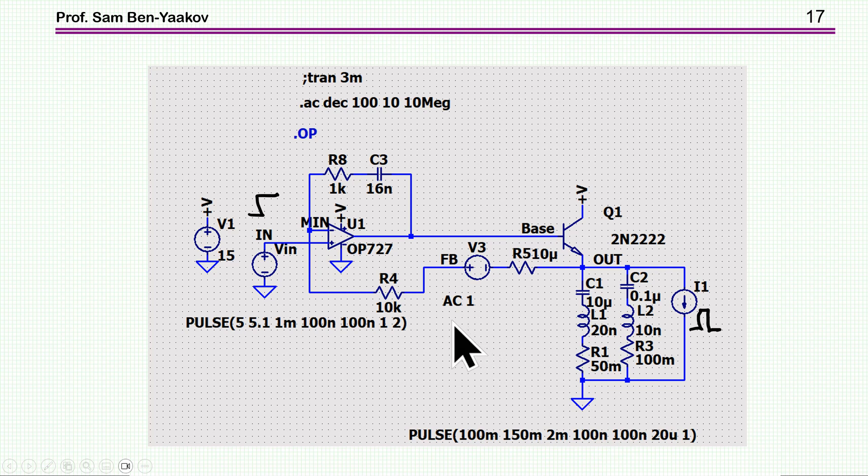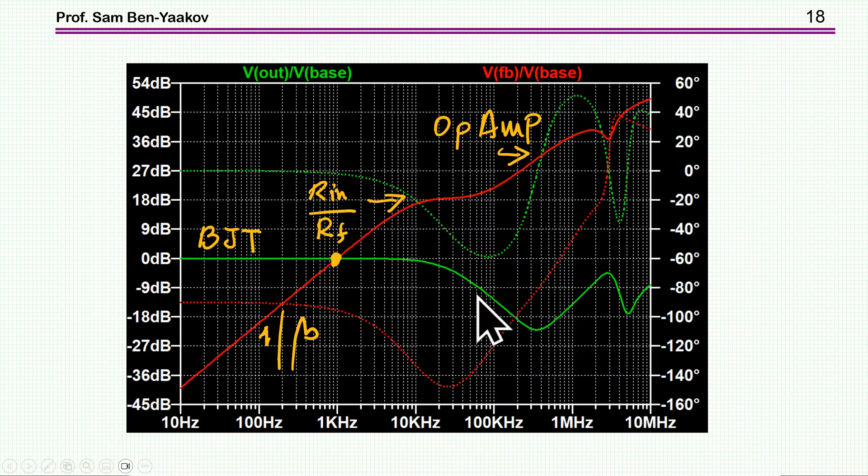So, here is now a simulation schematics, LT-SPICE, which already has these components. This is the BJT, and I've added here an AC source for AC transfer function. Also, I've added here a step function for the time domain simulation. And also, I've added here a current source for injecting a current as a load to see the load regulation. Okay, so, first of all, let's have a look at some of the transfer function. And, I'll start with the transfer function of what we have seen before between base and out. Okay, and then, I'm going to see the transfer function from here to here. This is the B or beta. And, actually, I'm going to plot 1 over beta.